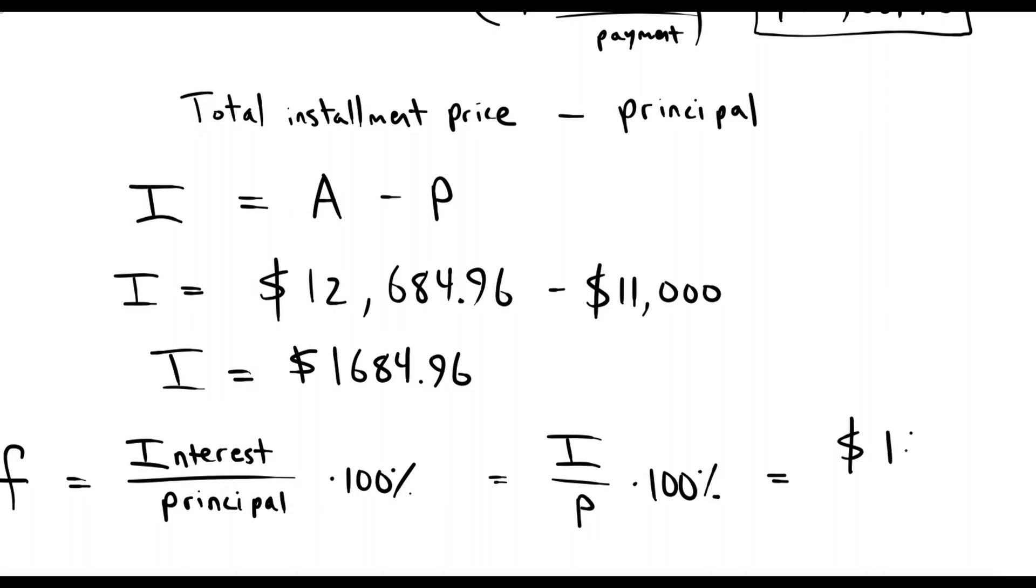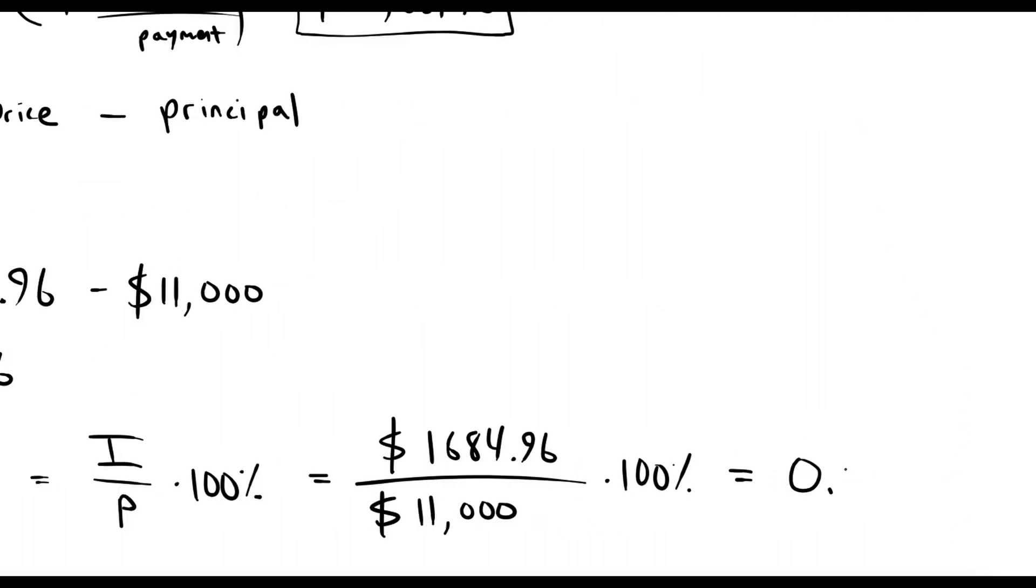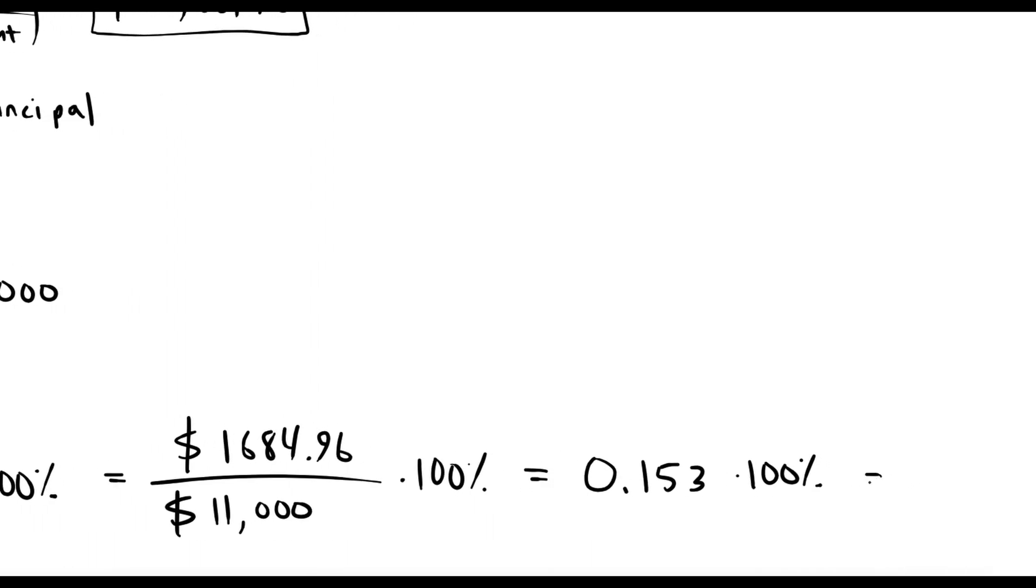Interest was $1,684 divided by $11,000. And let's see what that is. I get 0.153 times 100, which is 15.3 percent.